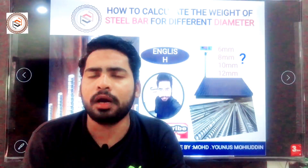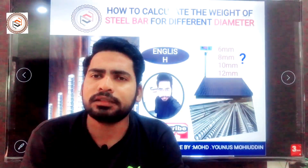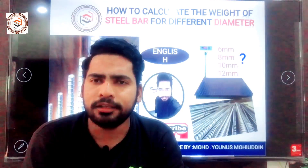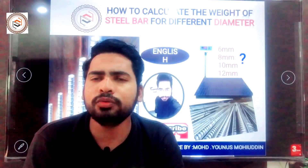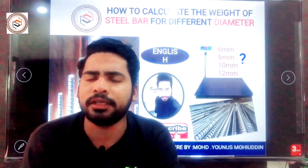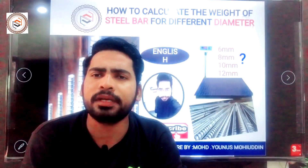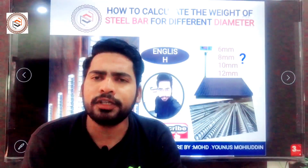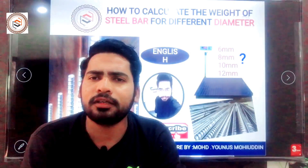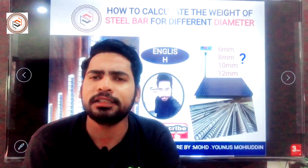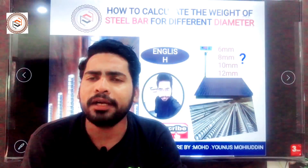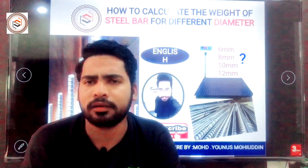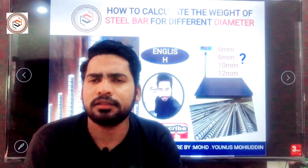In this class we are going to study how to calculate the weight of steel bar for different diameters. In the previous class we studied the unit weight formula for reinforcement or steel. Now we are going to apply that to calculate the weight of bars for different diameters used in structures.